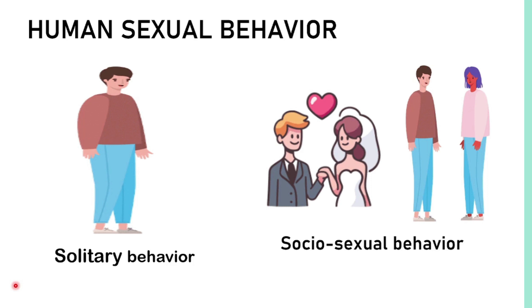Nowadays, humans are frequently being exposed to sexual stimuli, especially from advertising and social media. Some adolescents become very aggressive when they respond to such stimuli. The rate of teen-age pregnancy is recently increasing. The challenge is to develop self-control so as to balance suppression and free expression — to prevent pre-marital sex and to prevent acquiring STDs or sexually transmitted diseases.